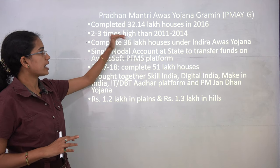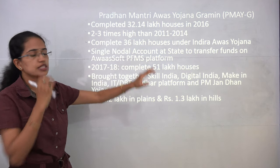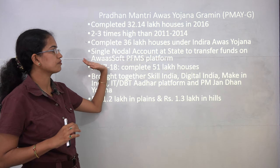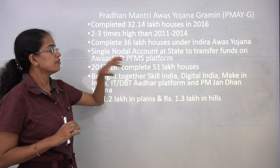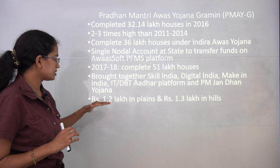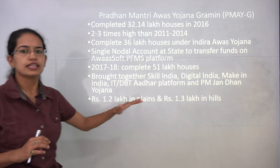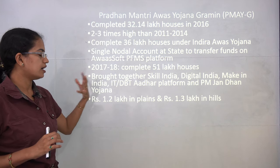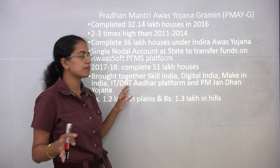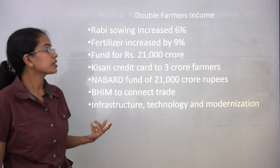Pradhan Mantri Awas Yojana Grameen is the rural version of the Housing for All scheme by 2022. Nearly 36 lakh houses have already been completed under the Indira Awas Yojana. The AWAS PFMS platform allows fund transfers at the state level. Assistance from government is nearly 1.2 lakhs in plain areas and 1.3 lakhs in hilly areas for house development.